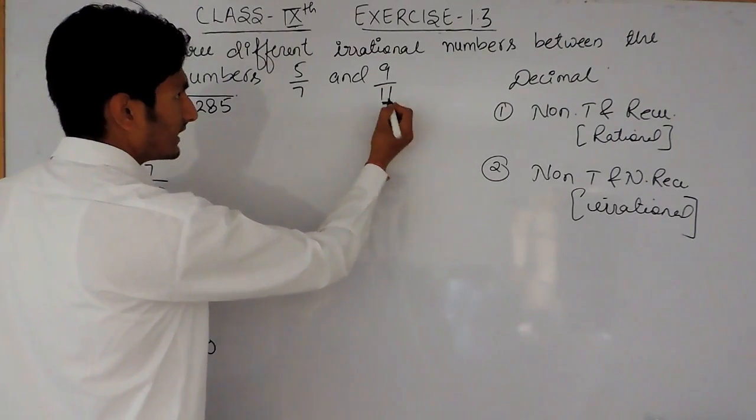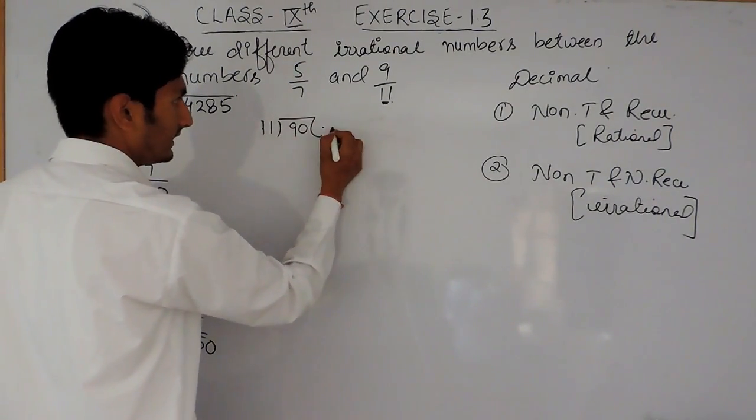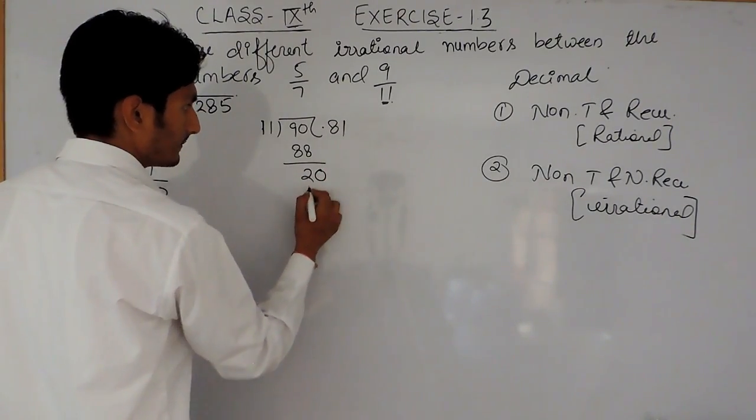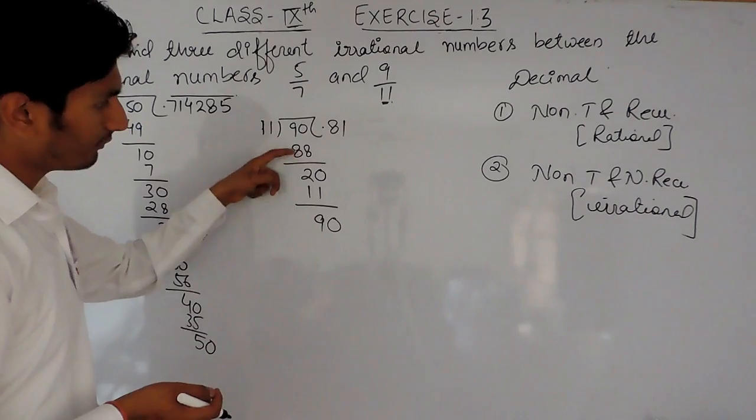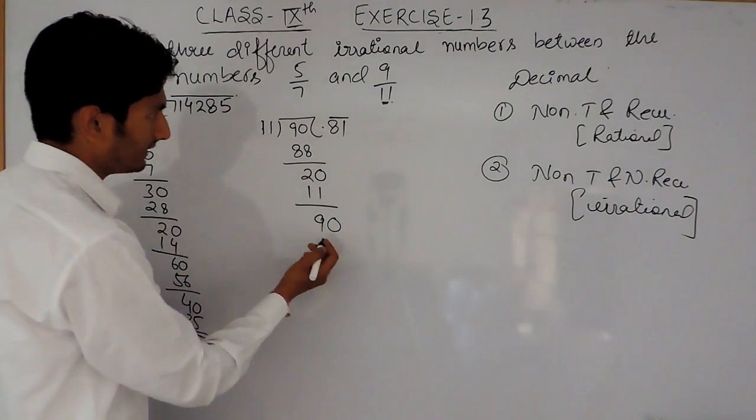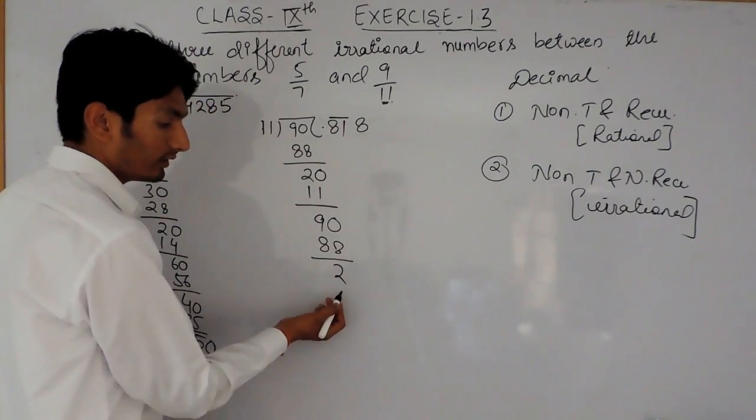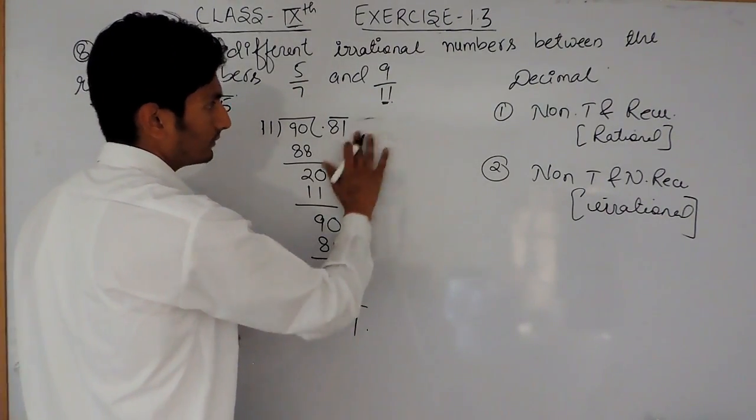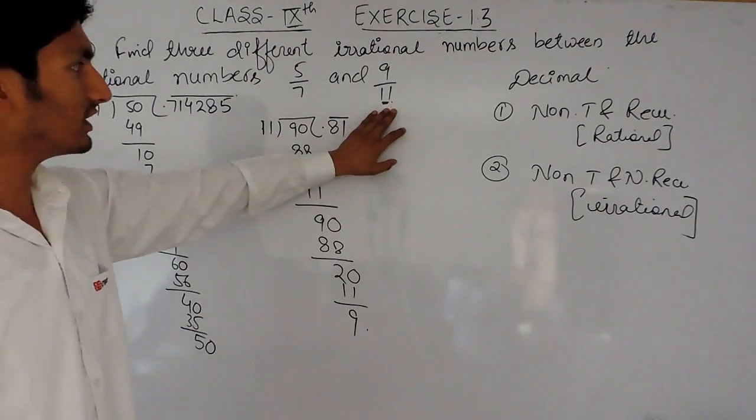Now similarly, if I have to find out the decimal expansion for 9/11, I have to divide 9 by 11. Doing the division gives 0.818181. From here, 81 will be repeated because the same pattern follows. So for this rational number, this will be its decimal expansion.